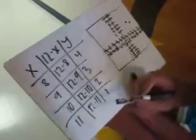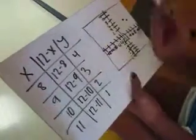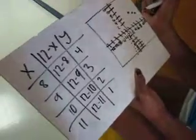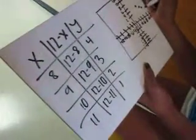And then for positive 10, for 10, you would go up to positive 2, and for 11, you would go up to 1.